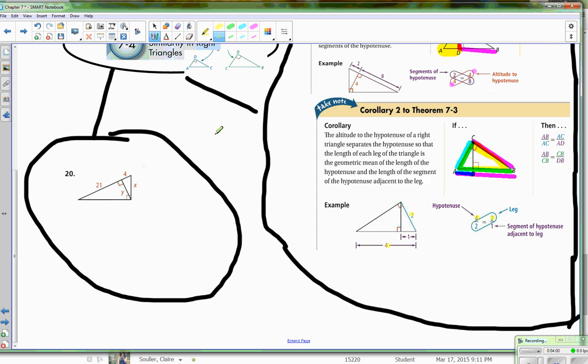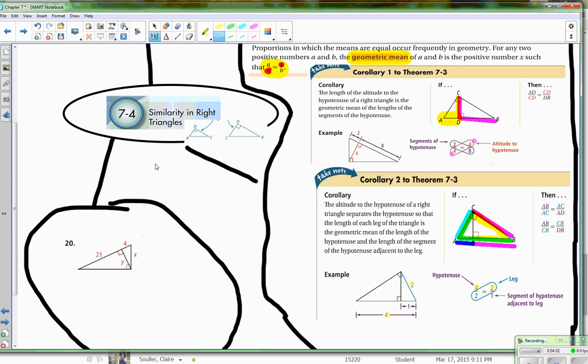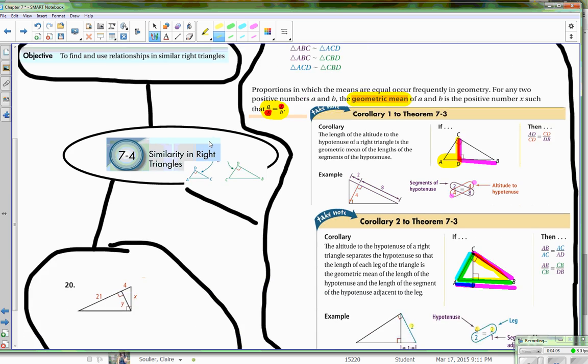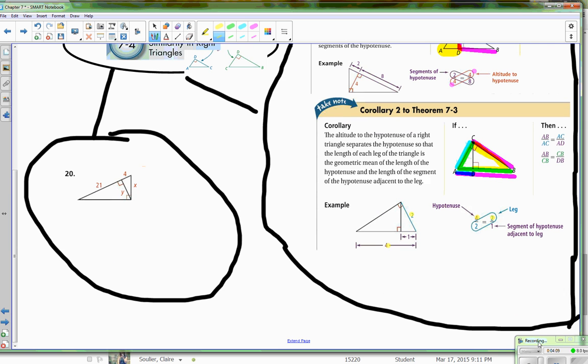All right, so let's look at our learning objective, which is to find and use relationships in similar right triangles. I'll show you guys my method for finding triangle answers. So if I have this triangle here where I have 21 to Y and 4 to X...